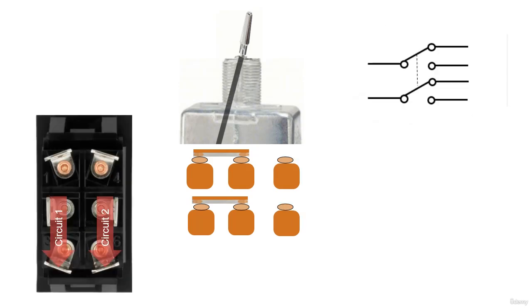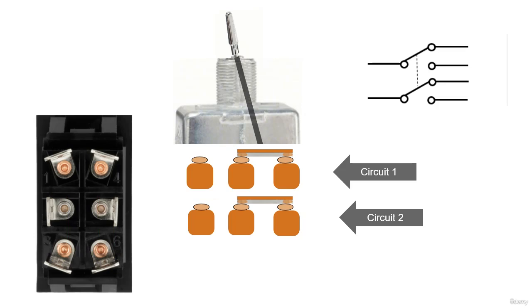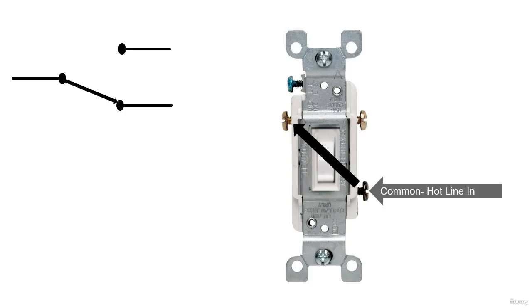If we have two circuits but the slide makes contact in both directions, this is a double throw, making it a double pole, double throw. A three-way light switch is a good example of a single pole, double throw.